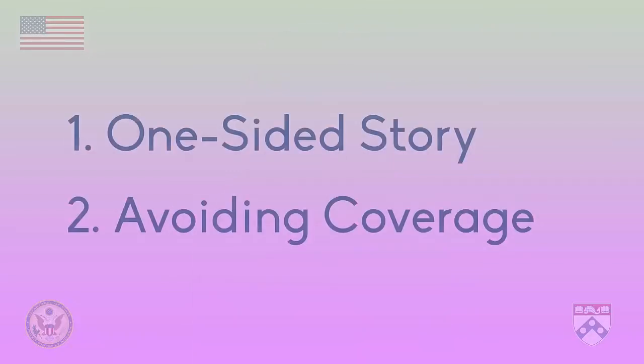To summarize, we've talked about two types of bias by omission: one-sided stories, which have bias because they aren't objective, and avoiding coverage of a story, which might happen due to a conflict of interest. Next, we're going to read about a possible instance of bias by omission in Facebook.